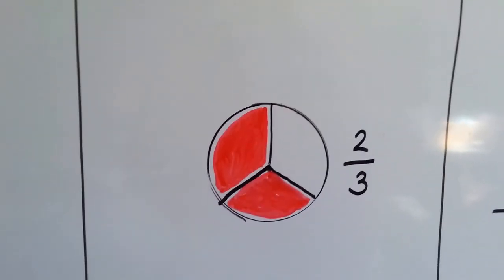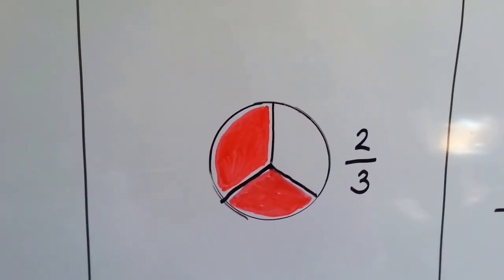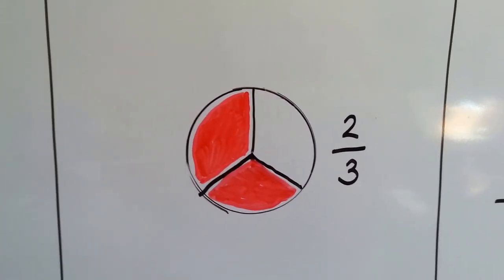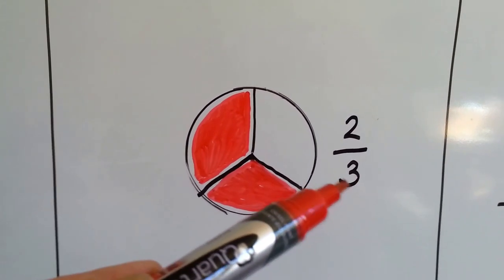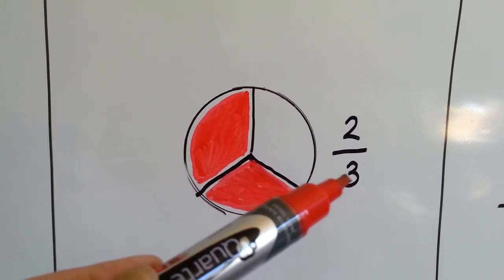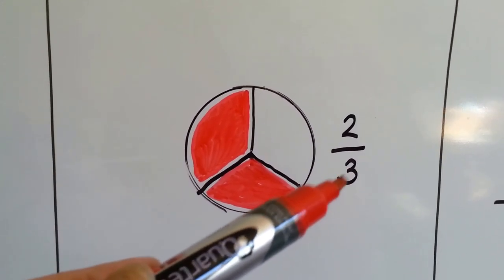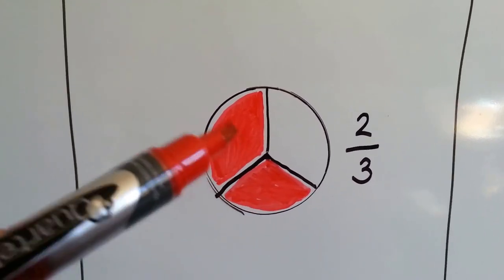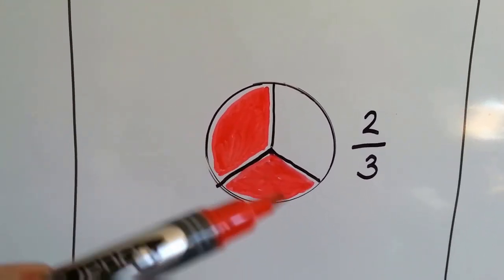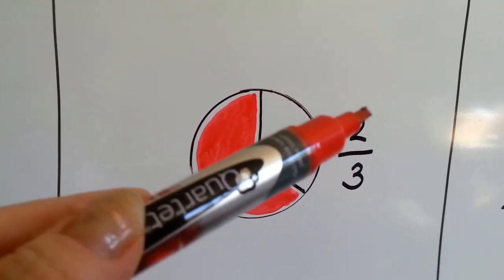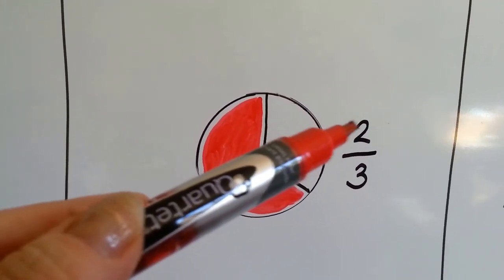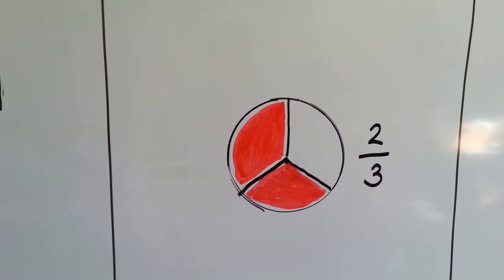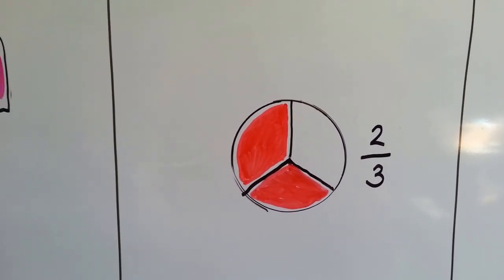Here we have a circle that's split into three pieces — one, two, three. It's split into three pieces, so the denominator is three. And two of the pieces are colored red, so the numerator is two. Two thirds of the circle is red.